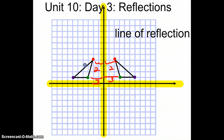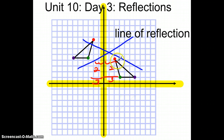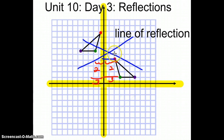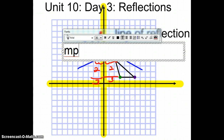For example, if I were to move this figure up here, this would no longer be an example of a reflected shape, because the two figures are not going to be the same distance from the line of reflection as each other. This is an example of something that is not reflected.